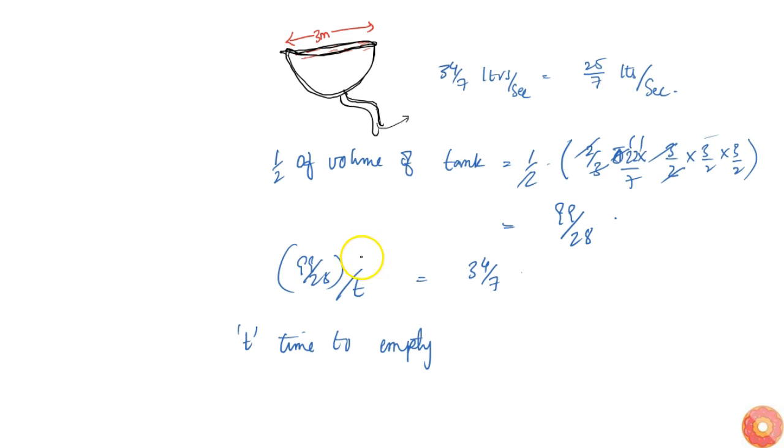This is given in liters and here we got this thing in meter cube, so if you turn into liters it will become times 1000. So 34/7 into t is equal to 99,000/28.